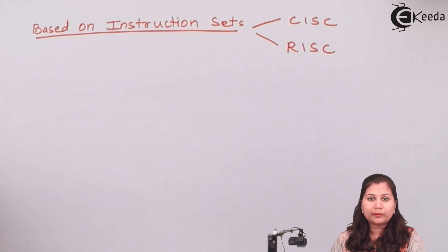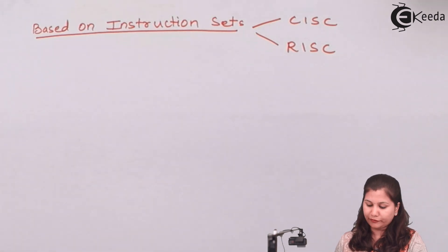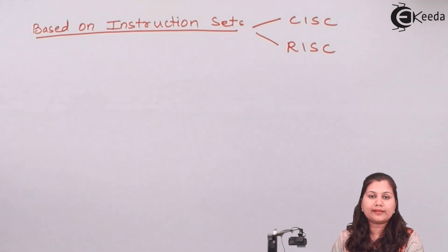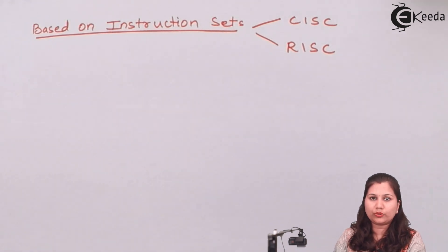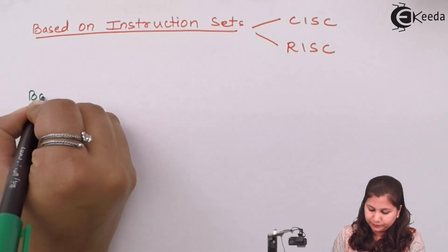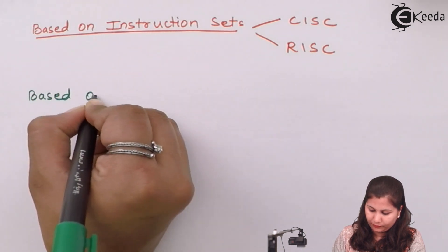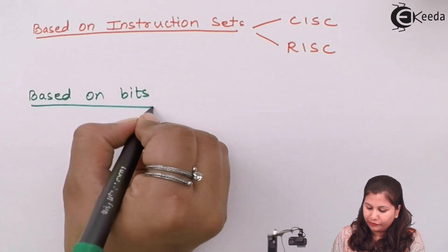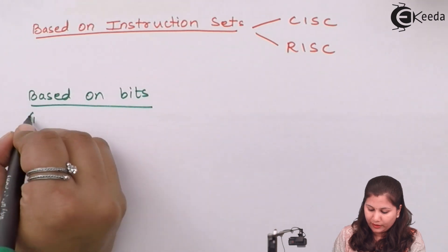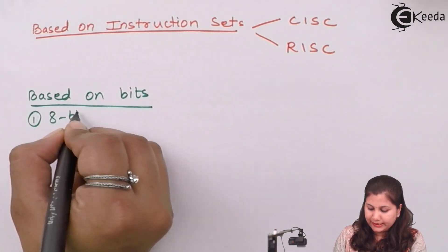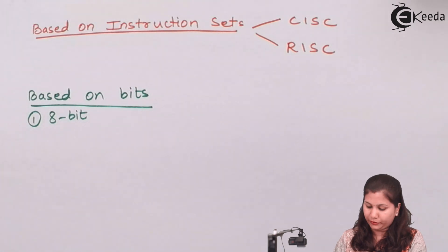Now we will study these classifications in detail. First, we will start with how microcontrollers are classified based on bits. Based on bits, we have three types: 8-bit, 16-bit, and 32-bit.